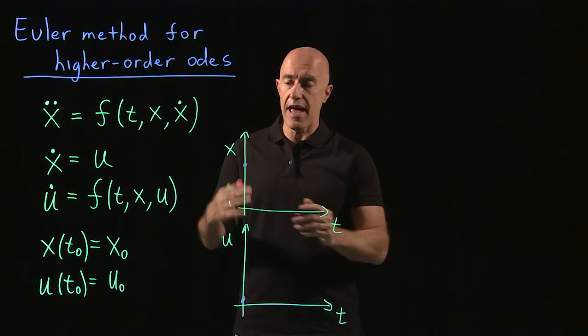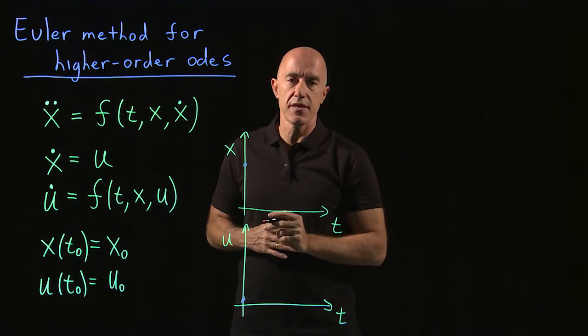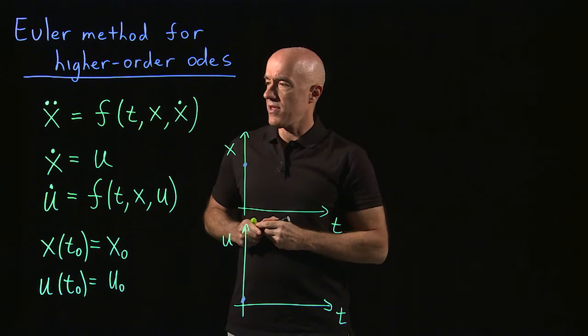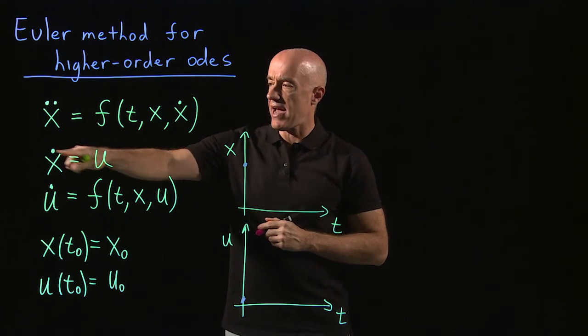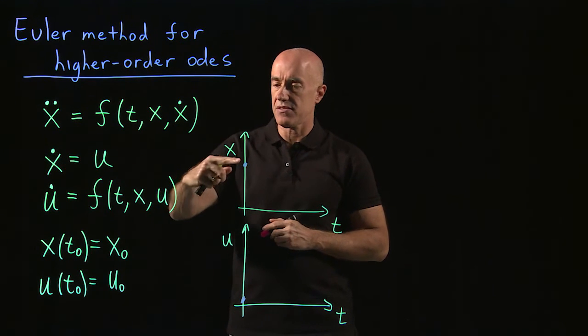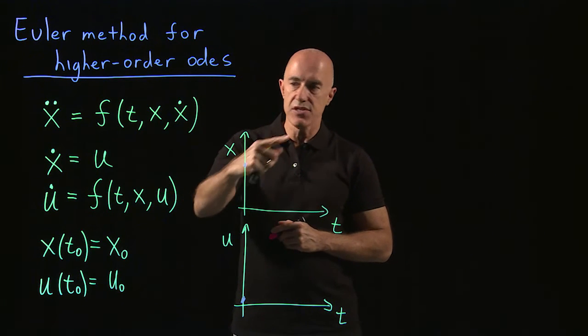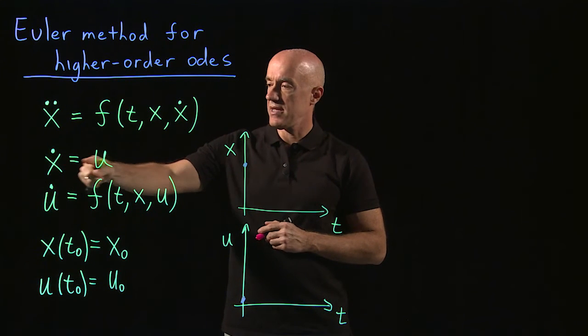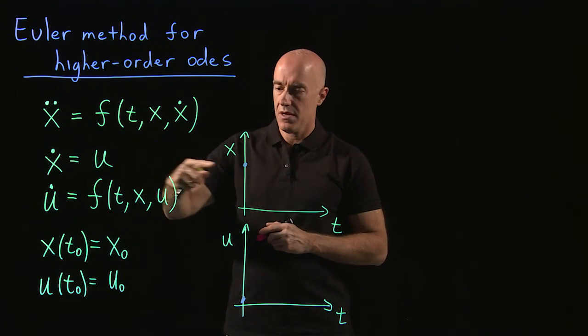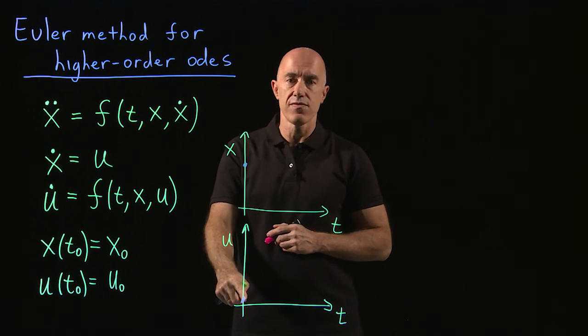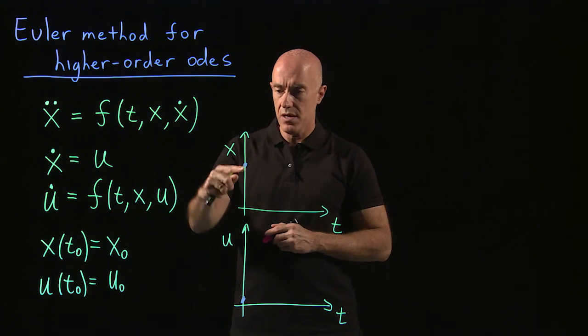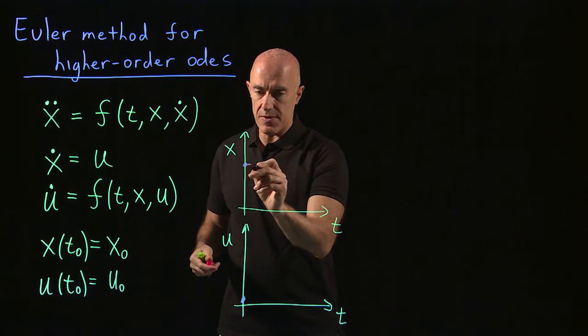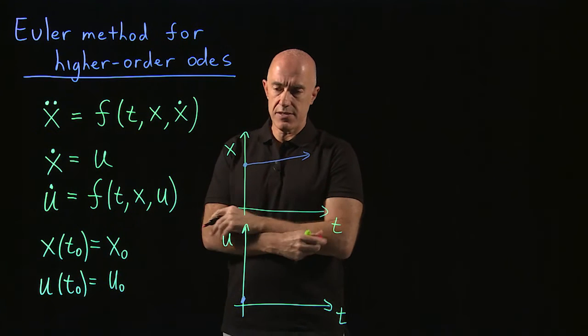And then after we have the initial condition, we make use of the differential equation. So the differential equation for x tells us that the slope of the tangent line to the curve here at t equals zero is given by u. But we actually know the value of u here. u is small so that the slope here is positive but small. So it looks something like this.